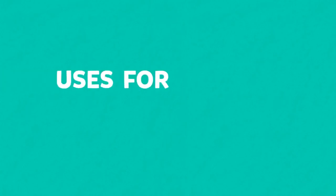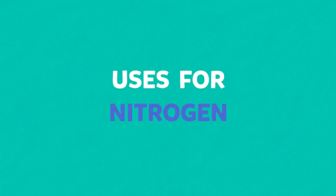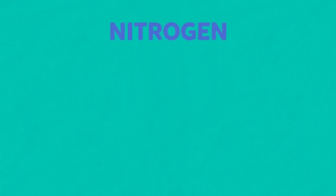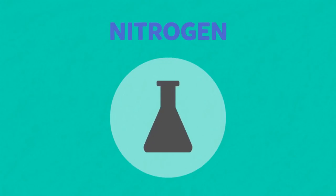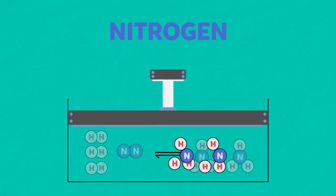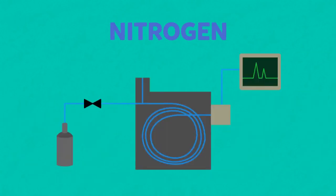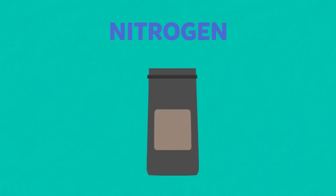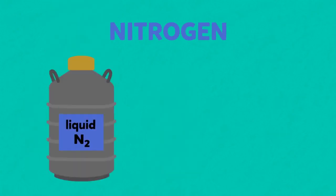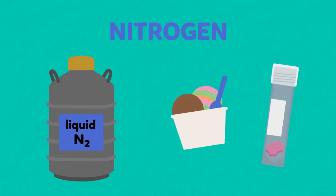The important uses for nitrogen are creating an inert atmosphere for chemical processes, the Haber process for the manufacture of ammonia, gas chromatography, packing oxidisable foods such as ground coffee, and also liquefied nitrogen can be used for the freeze drying of food and preservation of tissue samples.